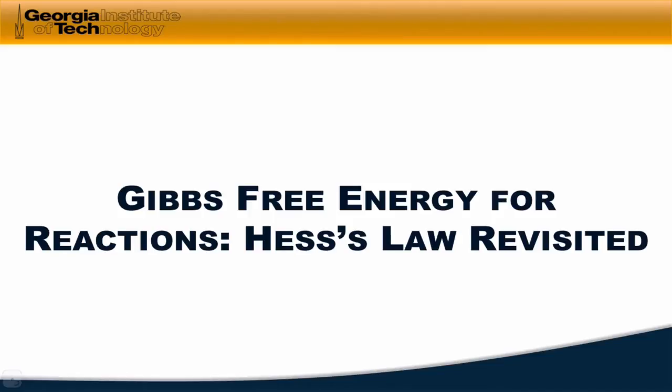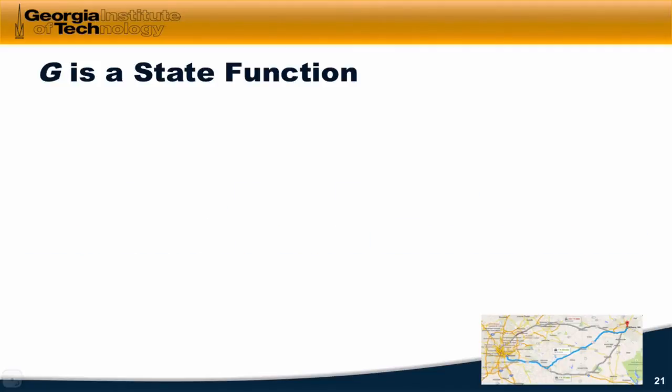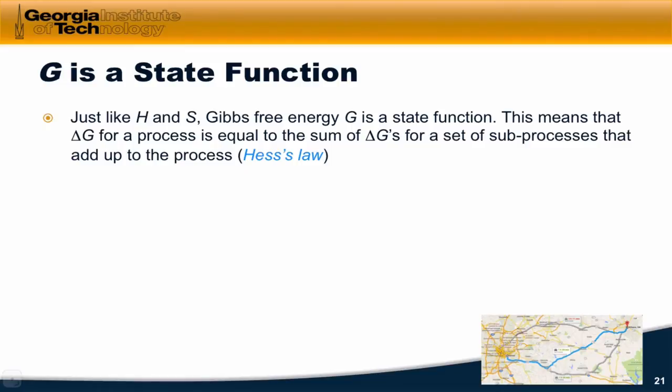Let's look at how we can use Gibbs free energy in a practical sense when thinking about chemical reactions. The thing to notice is G is a state function. H and S are state functions, therefore Gibbs free energy is a state function. This means that delta G for a process is equal to the sum of the delta G's for a set of sub-processes that add up to the process of interest.